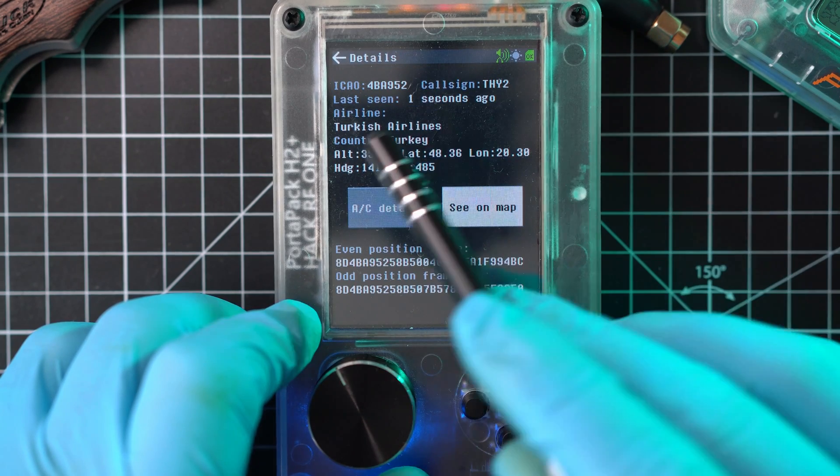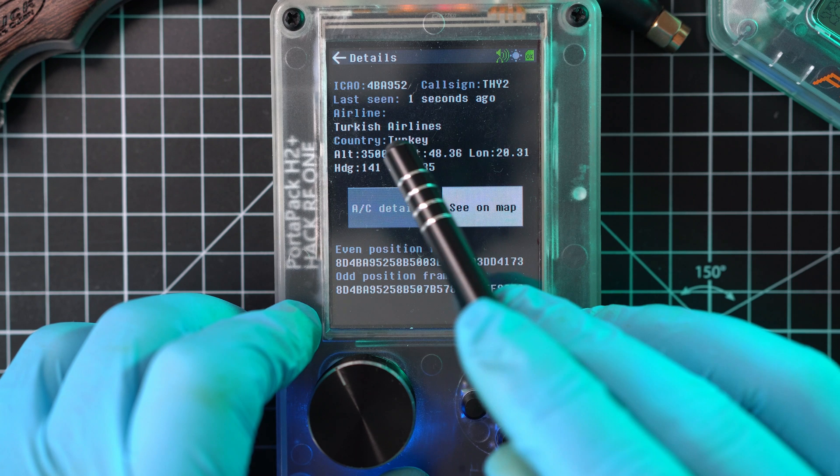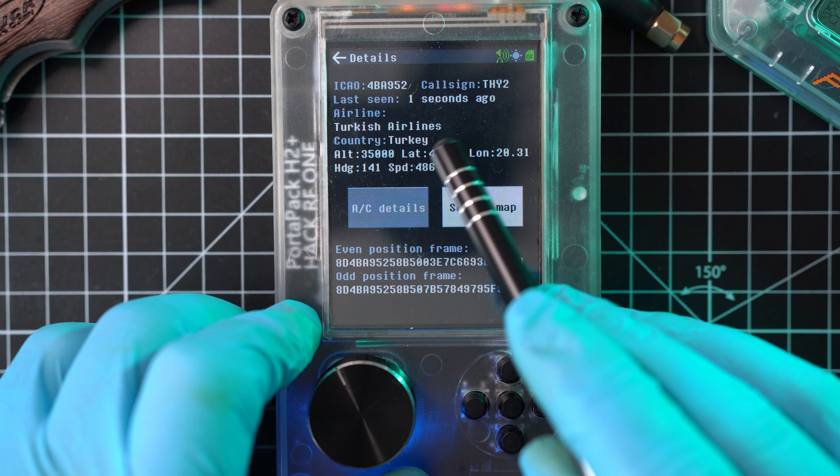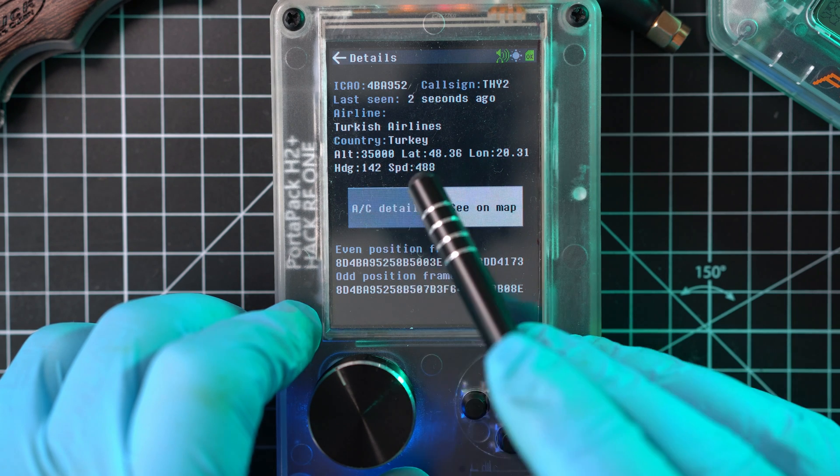Click on it. Here is registration number, call sign, Turkish Airlines, country as Turkey. Then altitude, latitude, longitude, heading and speed.